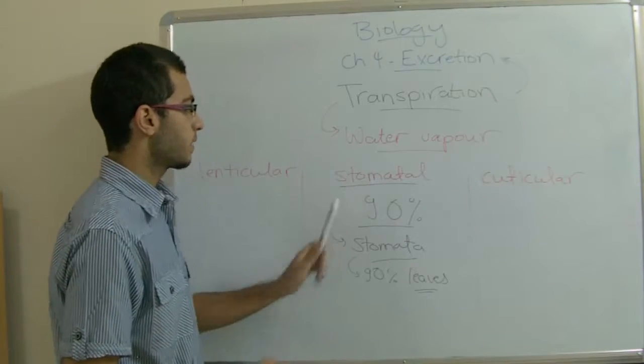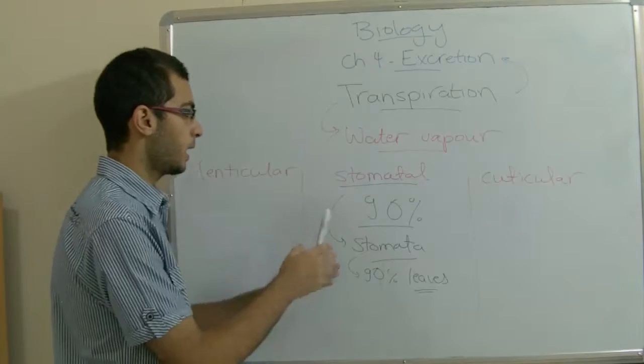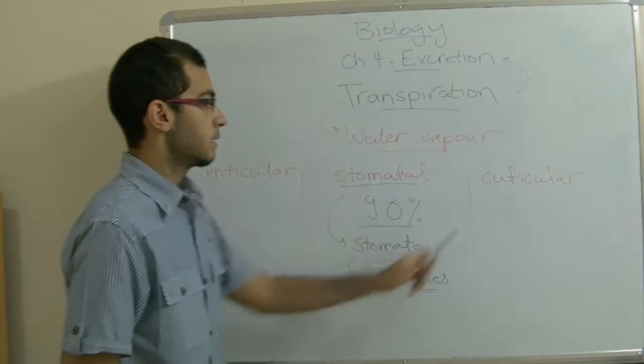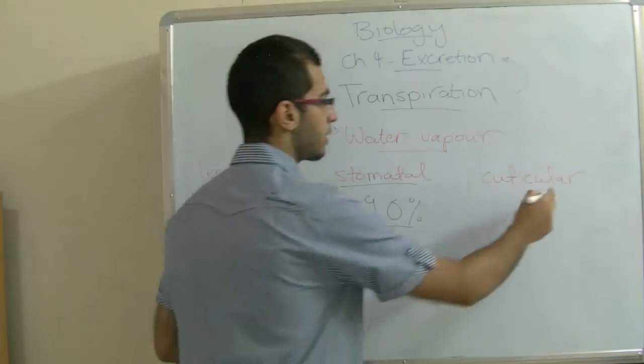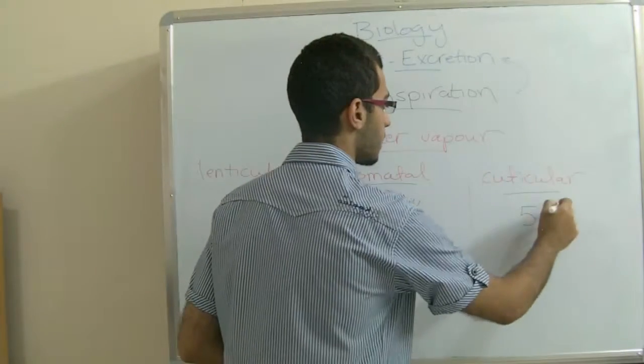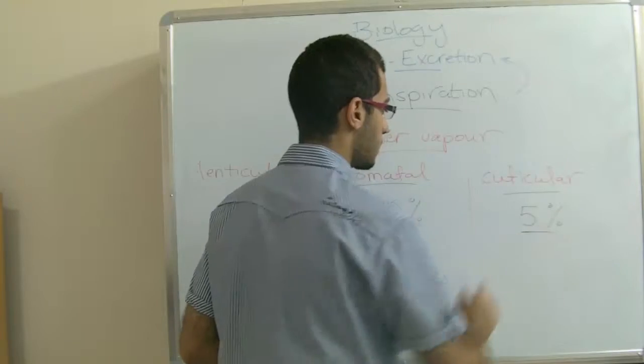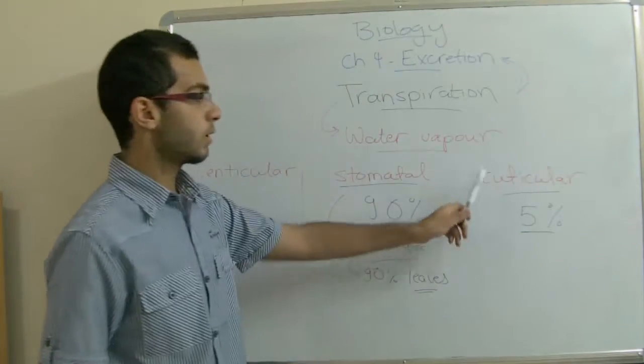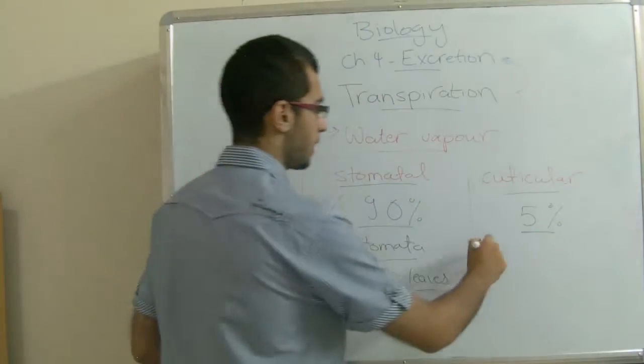This is the first kind which occurs through the stomata, so it's called stomatal transpiration. The second one is called cuticular transpiration and this doesn't exceed 5% of the total transpired water. And it's called cuticular because it takes place through the cuticle.